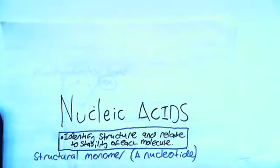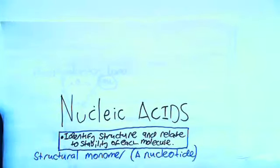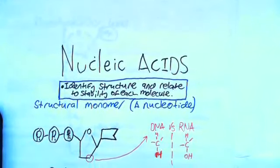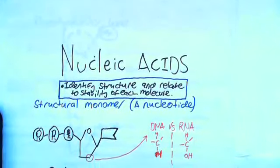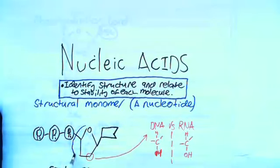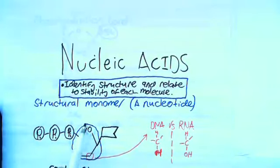First we need to look at the structural monomer which is called a nucleotide. In a nucleotide, you have this backbone made up of a sugar unit, a ribose sugar, a five-carbon sugar.